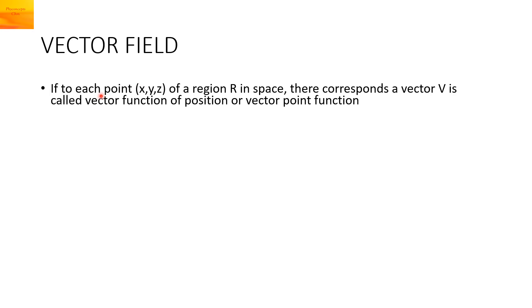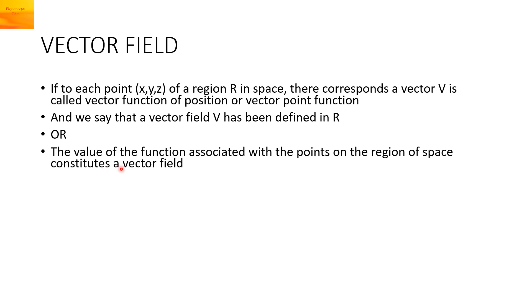Vector field. If to each point represented by the coordinates X, Y, Z of a region R in space, there corresponds a vector V, it is called a vector function of position or vector point function. The value of the function associated with the points on the region of space constitutes a vector field. Each point will be represented by a vector.